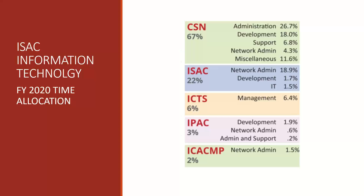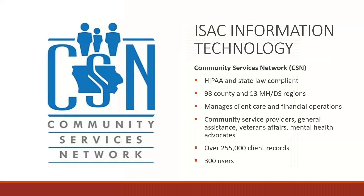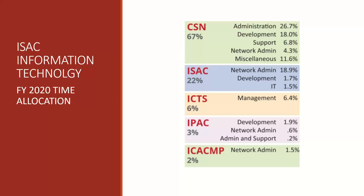For example, IPAC — the Iowa Precinct Atlas Consortium — offers a voter registration system that we currently do the development for. ISAC tools include the legislative tracking tool, election tool, salary survey, county directory, event registration system, and vendor registration system — those are all systems we created, support, or develop. And then there's CSN, the Community Services Network, which is probably the biggest project we work on. CSN is primarily what we work on. To sum it up, it's basically a web application used by counties and regions for tracking client care and services for mental health and disability services, substance abuse treatment, general assistance, veterans affairs, and more.